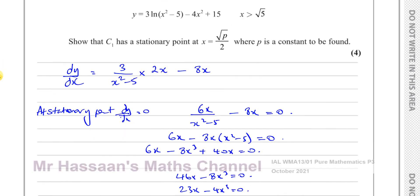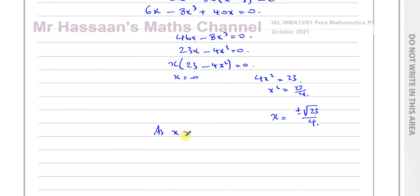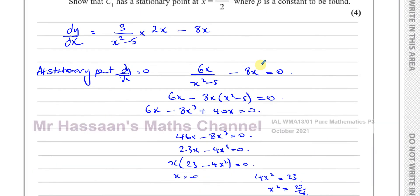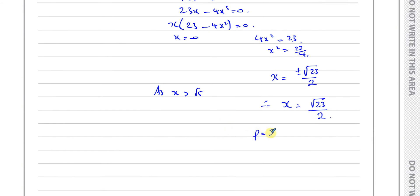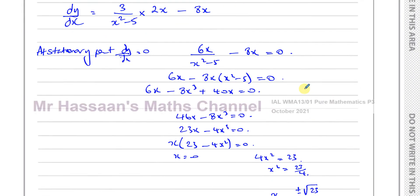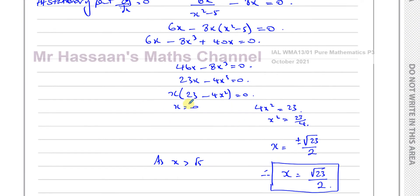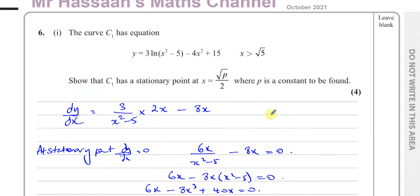Since x is greater than root 5, our value of x is just the positive value. Taking the square root of both sides gives x equals root 23 over 2, which is exactly the form required. So p is equal to 23. That's the x coordinate of the stationary point. There's another stationary point at x equals 0 but we've shown the one in the required form.